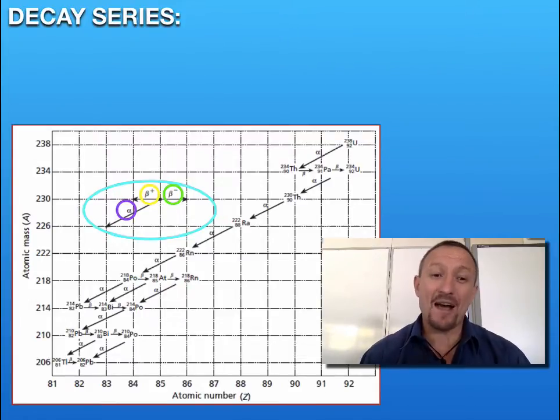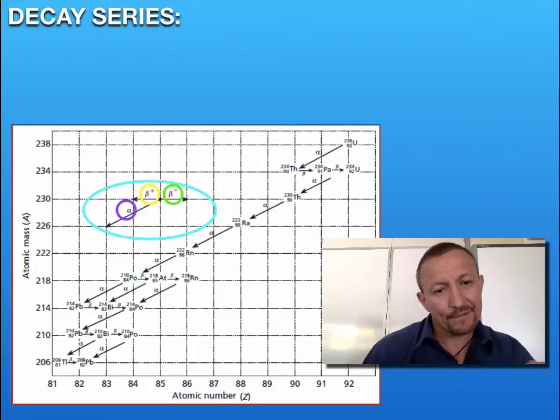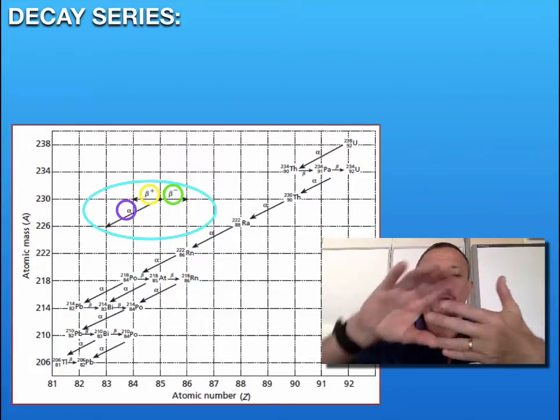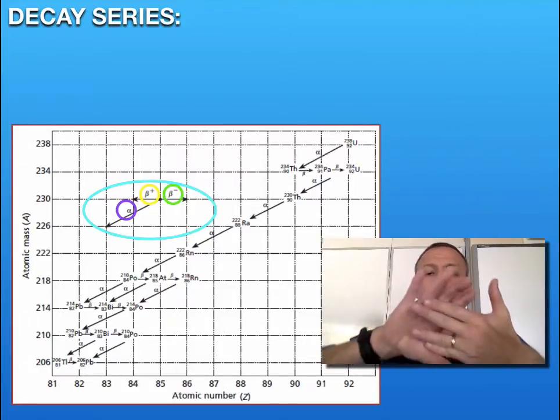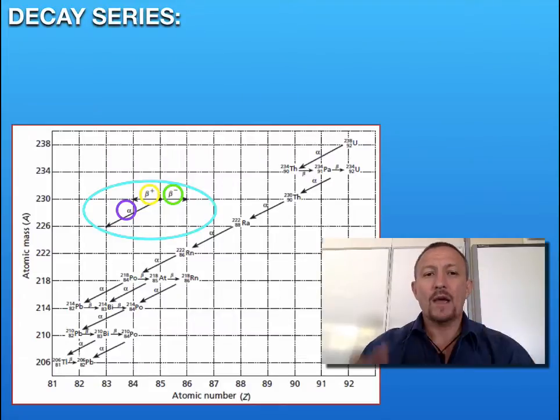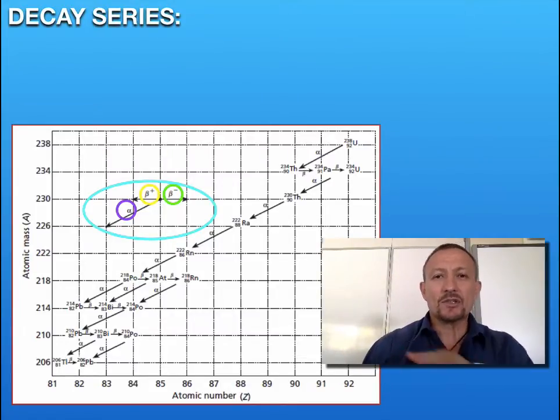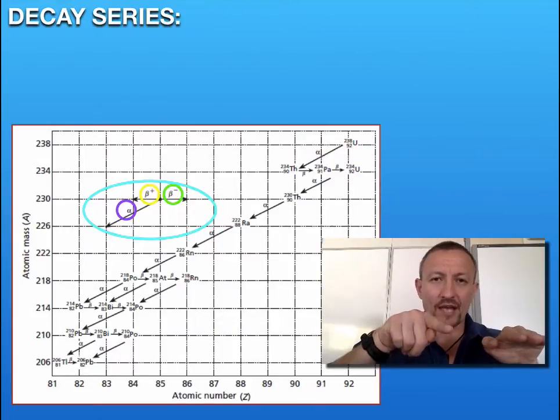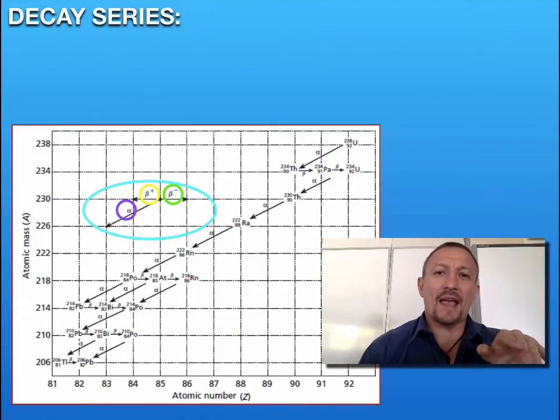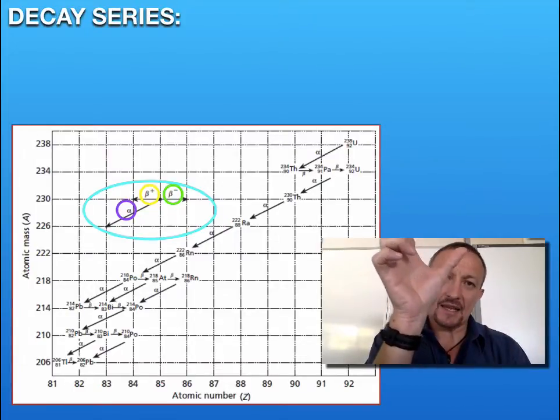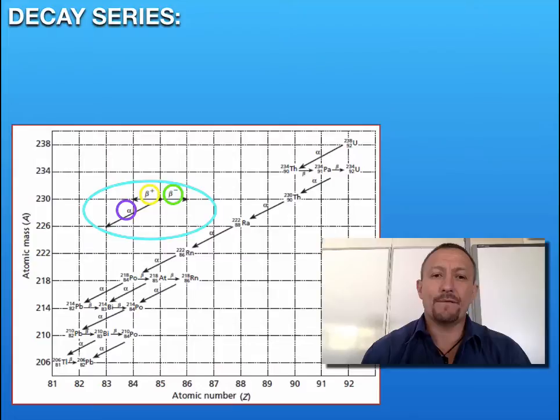That changes the type of element by two. Its atomic number goes down by two, that's why it moves to the left. The mass decreases by four, remembering we've got two protons and two neutrons, each with mass of one. The arrow looks like a vector going two to the left and four down. We've changed the atomic number by two and decreased the mass by four.